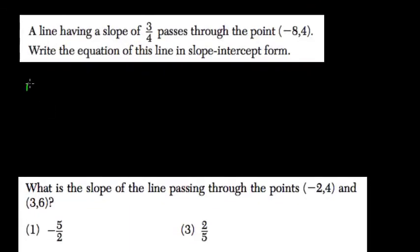A line having a slope of 3 fourths, so m equals 3 fourths, passes through the point negative 8, 4. So there's the point negative 8, 4.